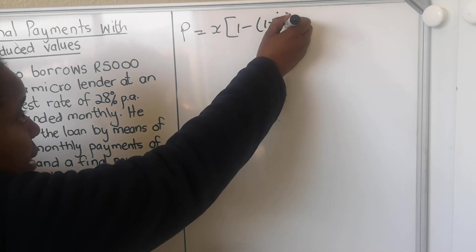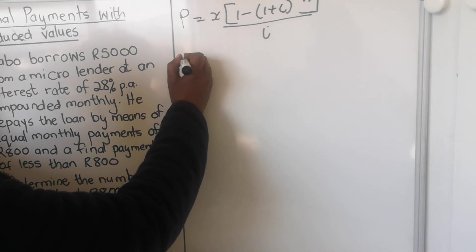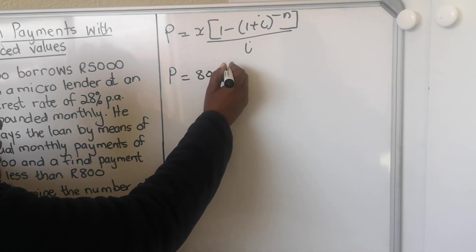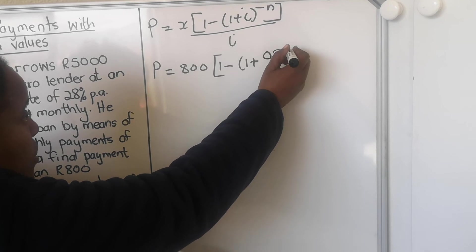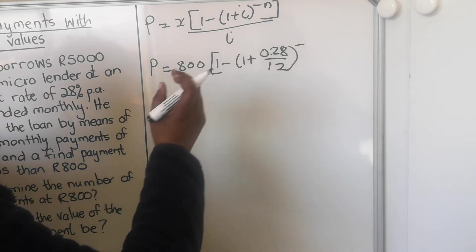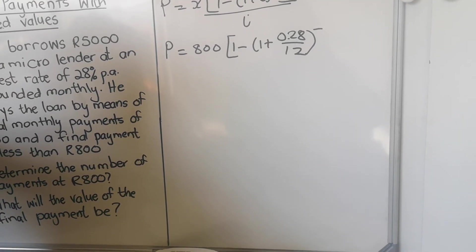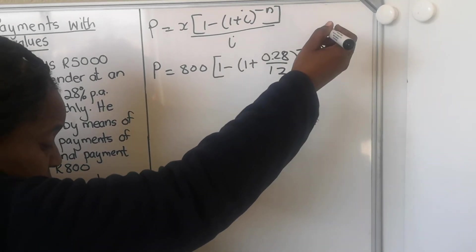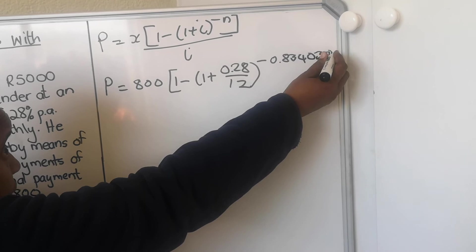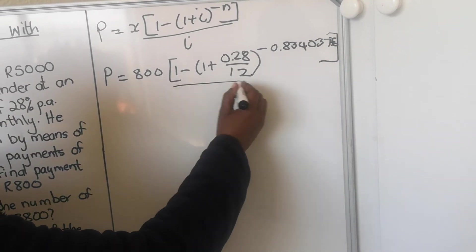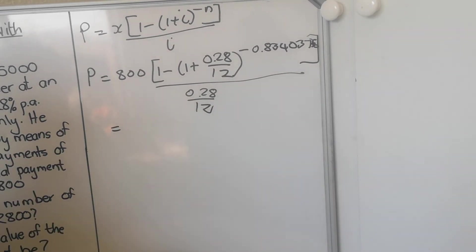1 minus 1 plus i minus n over i. And then you want the - 1 minus, 1 plus interest was 28%, 0.28 compounded monthly, divided by 12. Now when you get here, when you want the final payment, you take the decimal part of your answer. You remember we got a 6.83, so you go 0.83 and then write all the decimals: 4037... And close bracket, divided by your interest is 0.28 divided by 12.